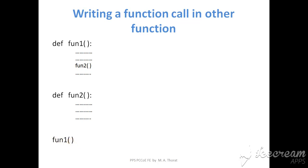As soon as the main statement is executed, it will transfer control towards function 1 and start its execution. But inside function 1, we have one more statement which is a function call to another function. As soon as this function call is executed, it will jump towards the function 2 definition, execute the whole function 2, then come back to the statement from where it was called, execute the rest of function 1, and finally return to the original main statement.